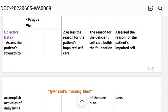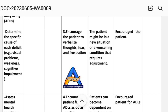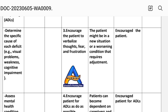Number two: assess the reason for the patient's impaired self-care, as the reason for the deficit builds the foundation of the care plan. Implementation: assess the reason for the patient's impaired self-care. Number three: encourage the patient to verbalize thoughts, fears, and frustrations. The rationale is that the patient might be in a new situation or a worsening condition that requires adjustment.